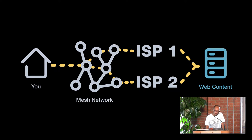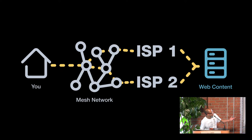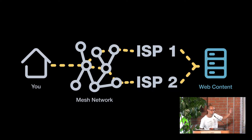Traditional mesh networks follow a model where we have a mesh infrastructure that's co-owned by the community, because you're basically pointing antennas at one another. But in order to access the internet, we have exit nodes served by some ISP. We traverse the community through the mesh network, go through the ISP links, and then fetch web content from centralized services — like watching a YouTube video or going to Google.